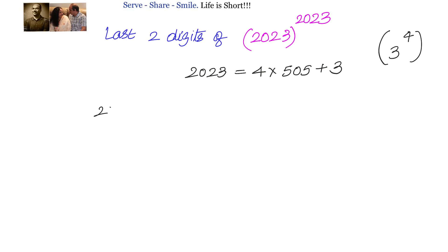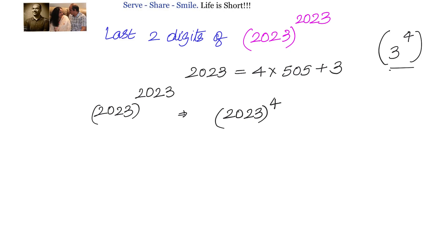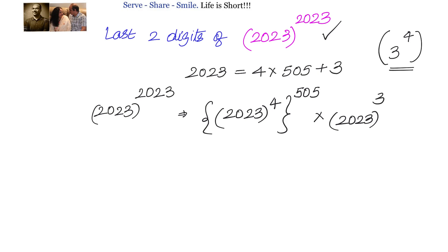To do this, we write 2023 as 4 × 505 + 3. Applying this, we write 2023^2023 as (2023^4)^505 × 2023^3. This way, 4 × 505 = 2020, plus the remaining 3, gives us back the original power of 2023.